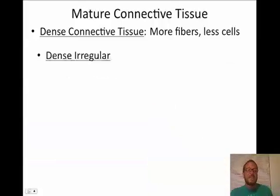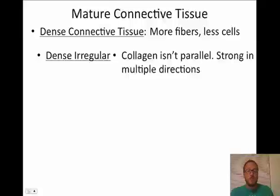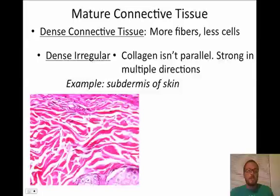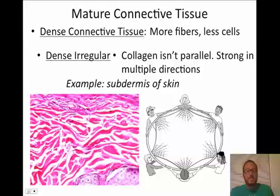The next type of dense connective tissue is dense irregular, which is strong in multiple directions because the collagen is not parallel — it goes in every which direction. An example is the subdermis of the skin, which allows your skin to be pulled in multiple directions without tearing. A good example would be a safety net — the force can be transmitted in all directions.